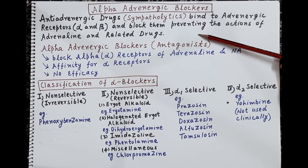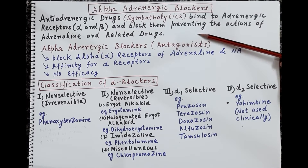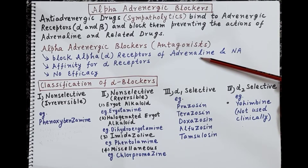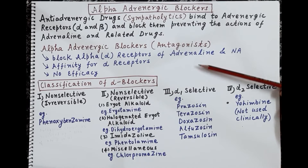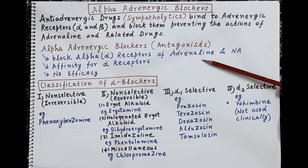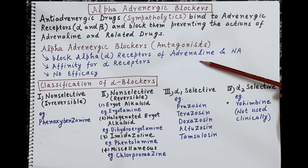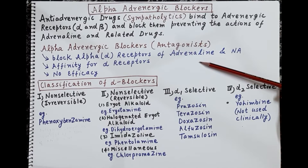Sympatholytics are of two types: alpha and beta blockers. In today's session, we are going to emphasize on alpha adrenergic blockers or alpha adrenergic antagonists. These are drugs that block alpha receptors of adrenaline and noradrenaline. Adrenergic drugs — adrenaline, noradrenaline, catecholamines, and related drugs — bind to either the alpha receptors, the beta receptors, or both.